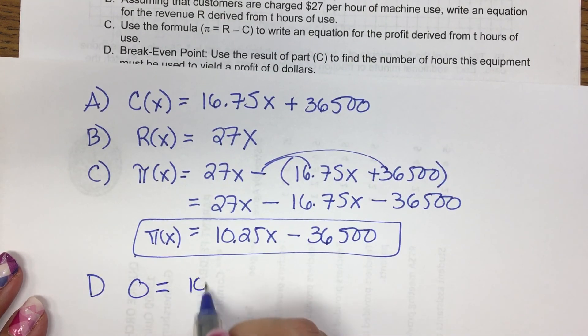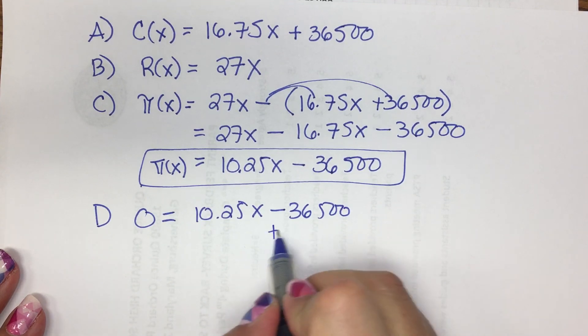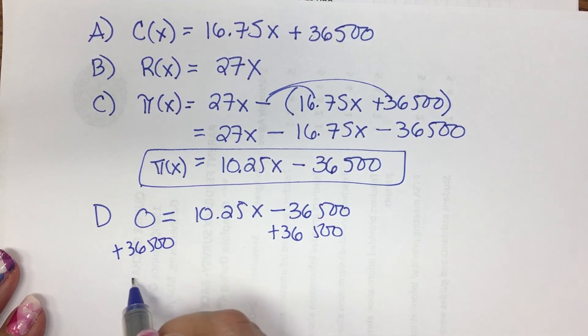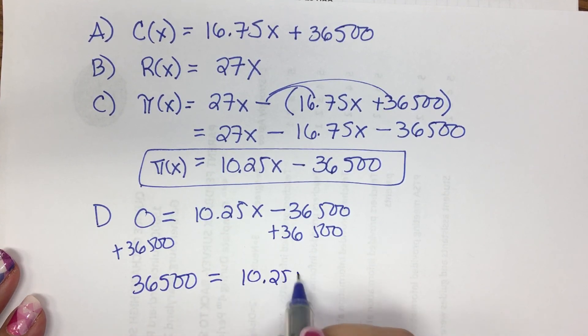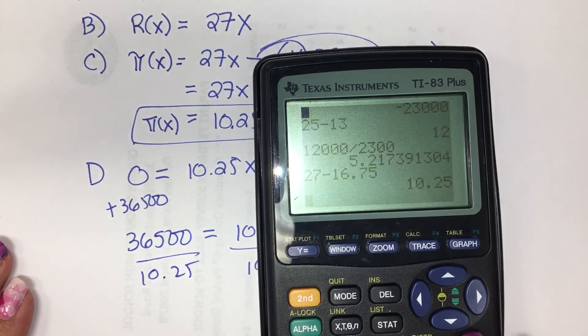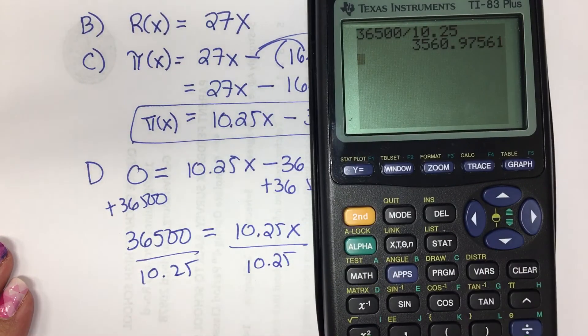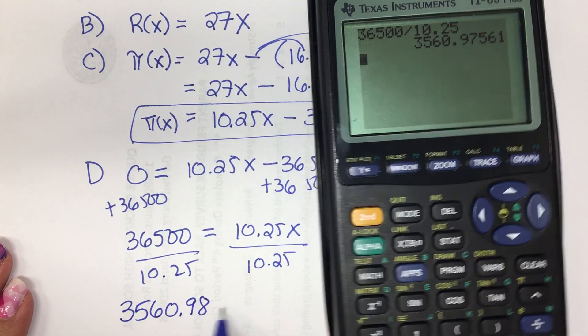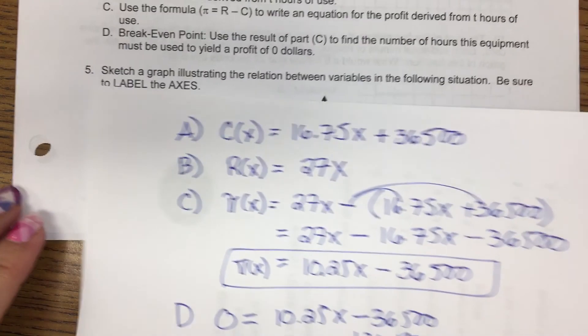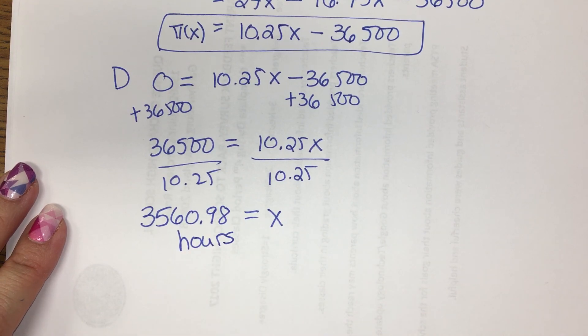And then D, break even point, is when profit equals zero. So what I'm going to do is add this over to the left. Divide by 10.25. And we get 3560.98. And what is it? We are going to be precise and label our answers. Hours. Don't forget your units.